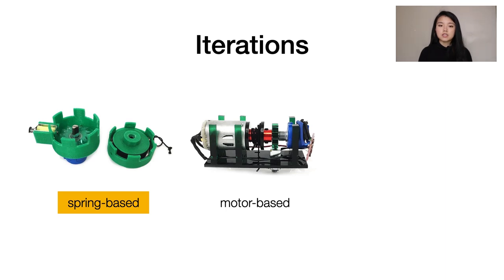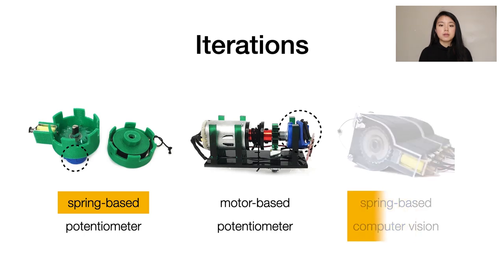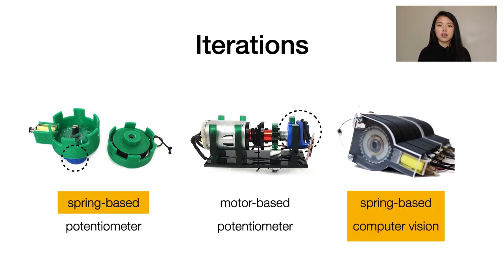For both of these iterations, we used a 10-turn potentiometer for tracking the finger distance from the module by counting the rotations of the reel. Ultimately, we replaced it with computer vision for higher accuracy.